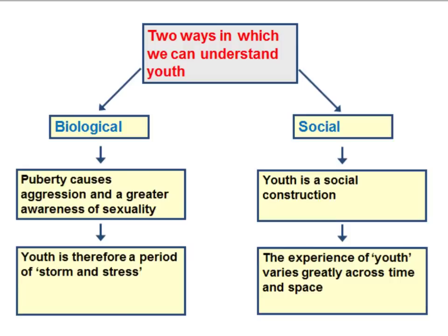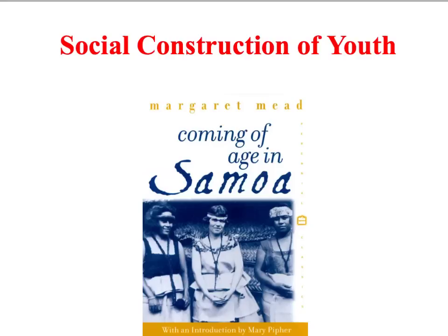However, sociologists and anthropologists have often challenged this biological view of adolescence as an inevitable time of storm and stress. They have argued that the experience of youth varies greatly across cultures and across time within the same culture, and that it is not inevitably a period of storm and stress. From this perspective, the changes associated with youth are primarily a social construction — down to culture and socialisation rather than biological factors. Anthropologist Margaret Mead suggested that the difficulties associated with adolescence in Western societies had much more to do with the role assigned to young people than with the biological changes of puberty.